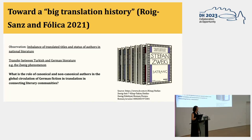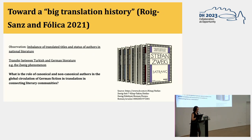This got me interested in how we can utilize bibliographic translation data extracted from national collections to test the translational tendencies and global canonization of translated German fiction. In my research I investigated the role of canonical and non-canonical authors in the global circulation of German fiction in translation and in connecting literary communities. I'm interested in the role of an author's translationalism — by which I mean their connecting function between languages and literary cultures in geographic space. Zweig is a really interesting prime example, forming a strong connection between the German literary environment and Turkish literary culture.